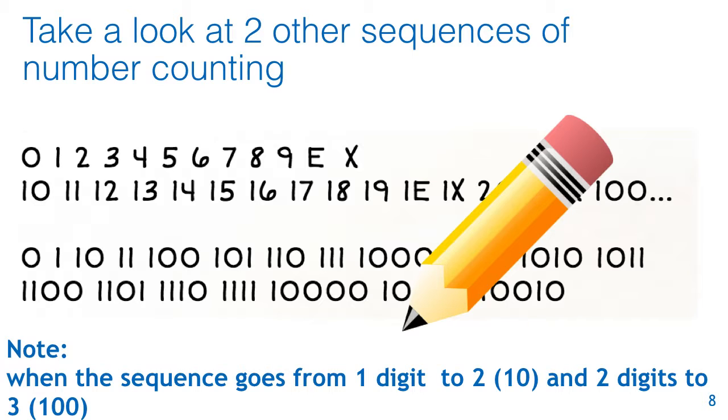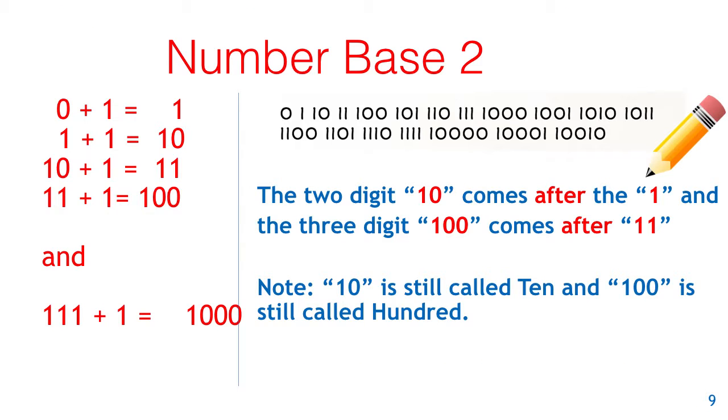And that is known as number base two. Because the two digit 10 comes immediately after the single digit 1. And the three digit 100 comes immediately after two digits of 11. We never actually get to our usual base ten number two.